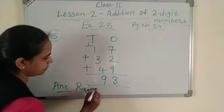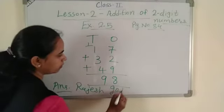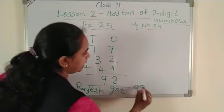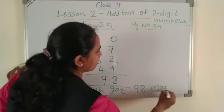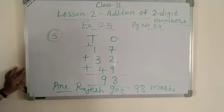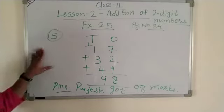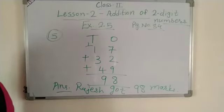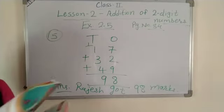Write the answer: Rajesh got 98 marks. Total marks 98. This is number 5. Next, number 6.